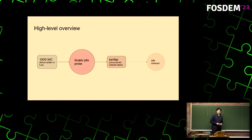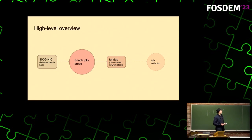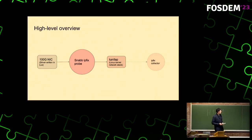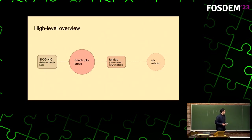From a bird's eye view, SnapFlow works like this: we read packets from a 100-gigabit NIC, process those packets to extract flow information in a SNAP process, and then send off data records over a TunTap interface to the IPFIX collector.